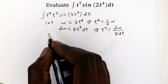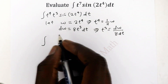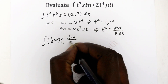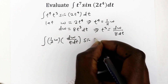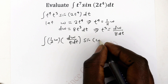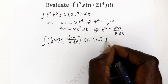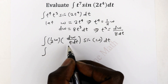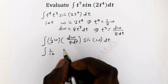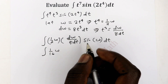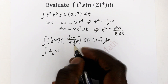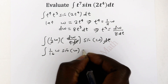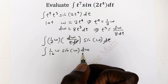Our integral now becomes: t^4, which is w/2, times t^3 dt, which is dw/8, times sine of 2t^4, which is sine of w. Simplifying, we get 1/2 times 1/8, which is 1/16. The dt terms cancel, leaving us with the integral of (1/16) w sine of w dw.